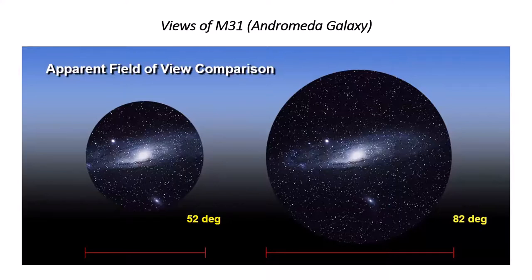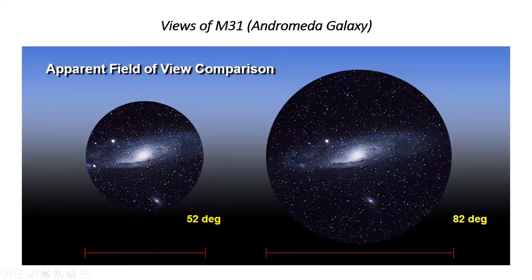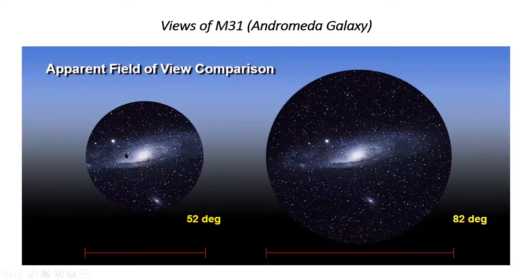Here's a dramatization of Plössl versus ultra-wide eyepieces showing M31 the Andromeda Galaxy. The galaxies aren't any bigger from one eyepiece to the other — it's just the apparent and actual field of view that changes. In a 52-degree Plössl you typically can't see M31, M32, and M110 all in the same field unless at very low mag. An 80-to-100-degree eyepiece at 20-25mm focal length would let you see them all comfortably.